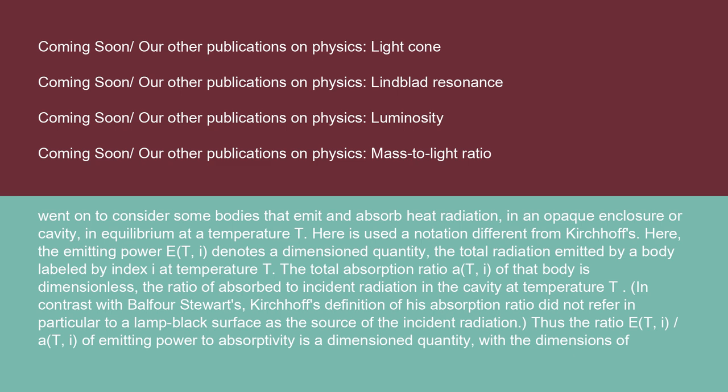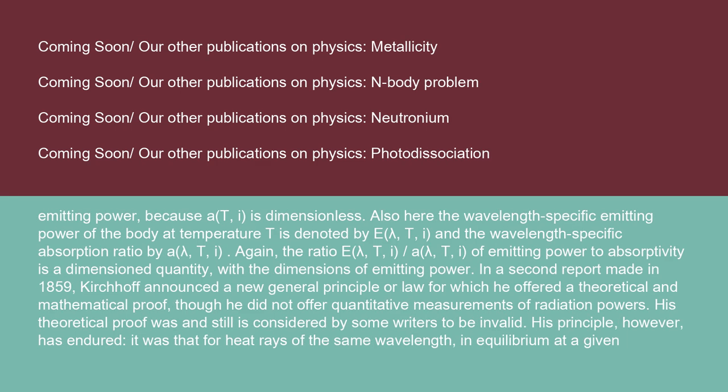Here a notation different from Kirchhoff's is used. The emitting power E(T,i) denotes a dimensional quantity — the total radiation emitted by a body labeled by index i at temperature T. The total absorption ratio A(T,i) is dimensionless — the ratio of absorbed to incident radiation in the cavity at temperature T. In contrast with Balfour-Stewart's approach, Kirchhoff's definition of his absorption ratio did not refer in particular to a lamp black surface as the source of incident radiation. Thus, the ratio E(T,i)/A(T,i) of emitting power to absorptivity is a dimensional quantity with the dimensions of emitting power.